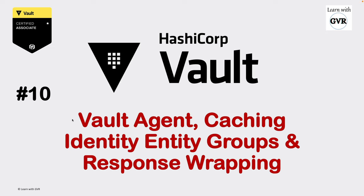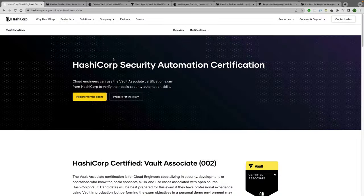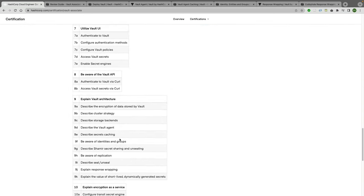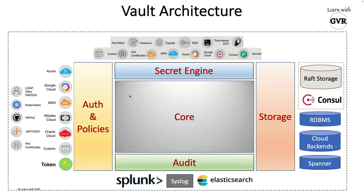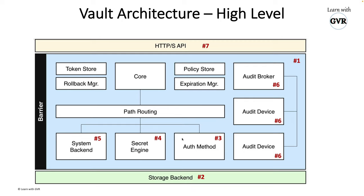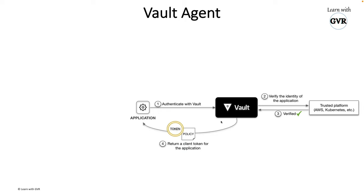This is the HashiCorp Vault learning series, point of view. The 10th topic is Vault Agent, its caching, identity entity groups, and response wrapping. Looking at the HashiCorp certification home page for Vault Associate, scrolling down to the 10th and 9th topic, we can see Vault architecture which covers Vault Agent, secrets caching, identity groups, and response wrapping — these are the new topics.